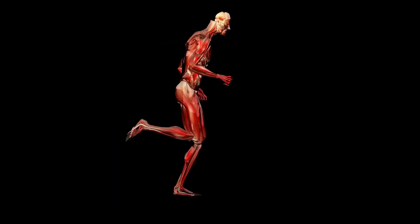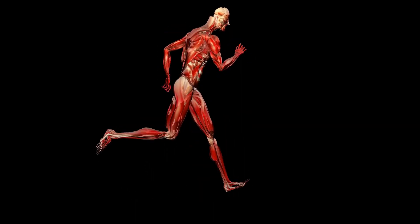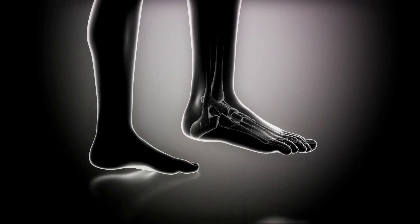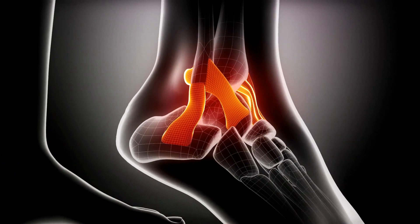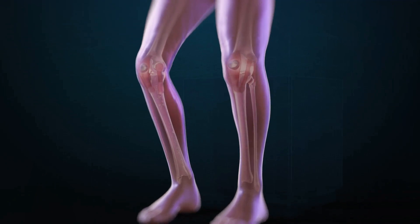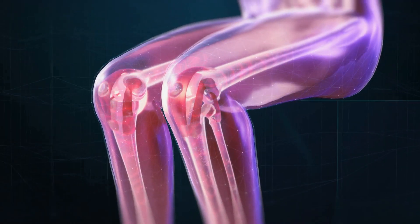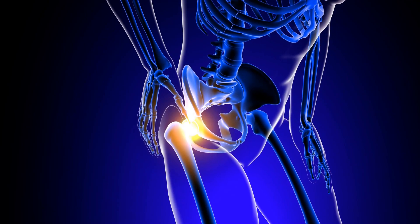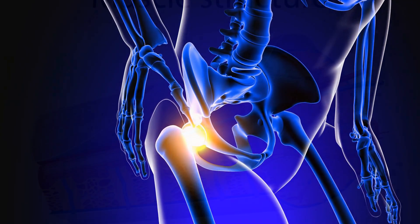But how do the bones move without crashing into each other? The answer: joints. Joints are where two or more bones meet, and they are designed to allow for different types of movement. Some, like the hinge joints in our elbows and knees, allow movement in only one direction, while others, like the ball and socket joints in our shoulders and hips, allow for a wide range of motion.